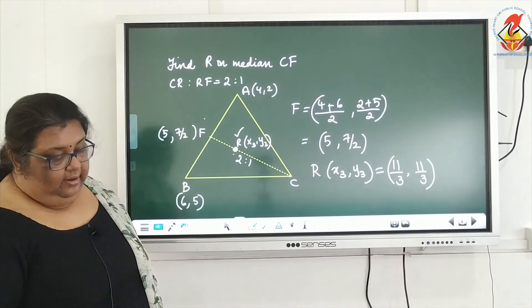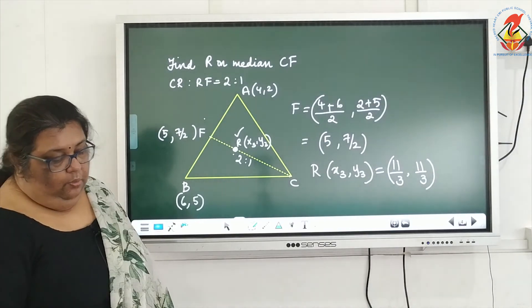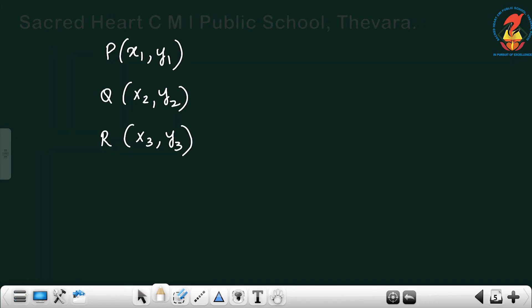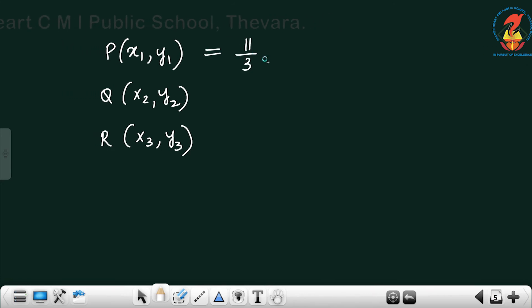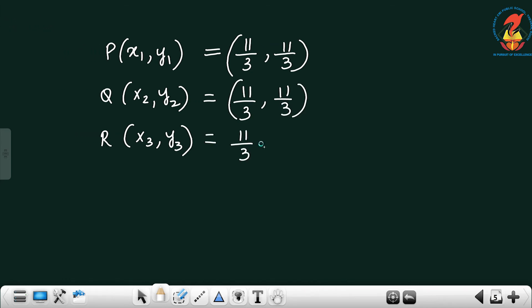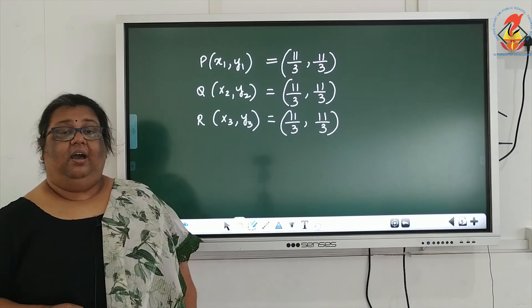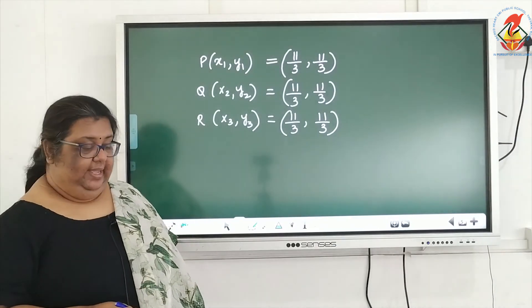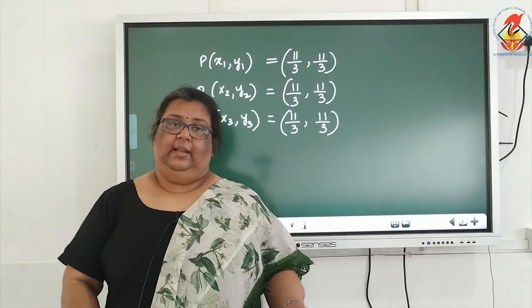Now we have the values of P, Q, and R. The next subdivision asks: what do you observe? Writing all the coordinates — P is (11/3, 11/3), Q is (11/3, 11/3), R is (11/3, 11/3). All the coordinates are equal. We are getting (11/3, 11/3) for all three points.